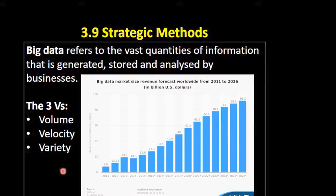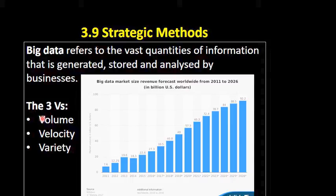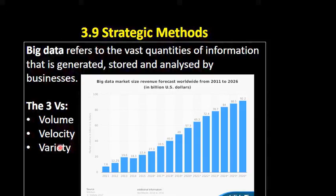There are three V's associated with big data: volume, velocity and variety. In other words, we're collecting a huge amount of data very quickly and there are lots of different types of it.